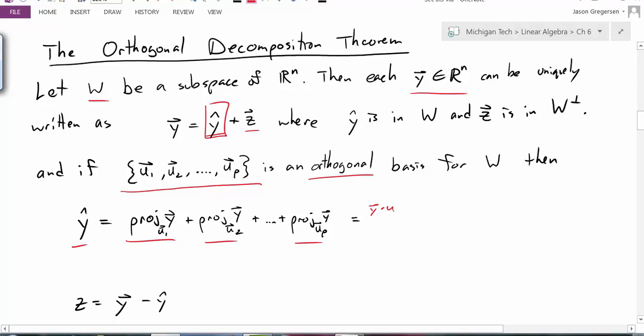This would be y dot u1 over u1 dot u1 times u1 plus y dot u2 over u2 dot u2 times the u2 vector plus dot dot dot plus the projection of y onto up. So that would be y dot up divided by up dot up times the vector up. So if we calculate all those projection vectors, we sum them all up, that will give us y hat. And then of course, to find our z, it's just calculating that difference, y minus y hat.